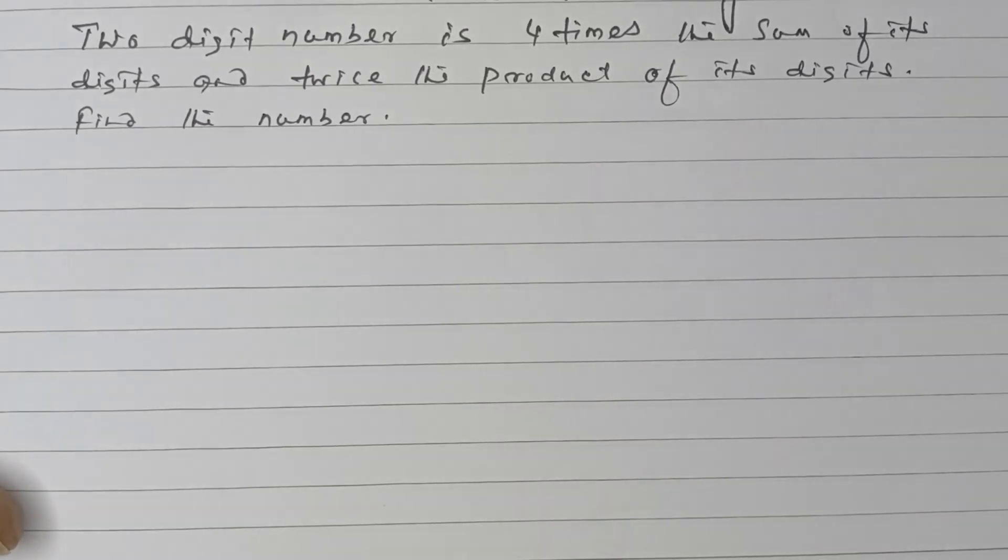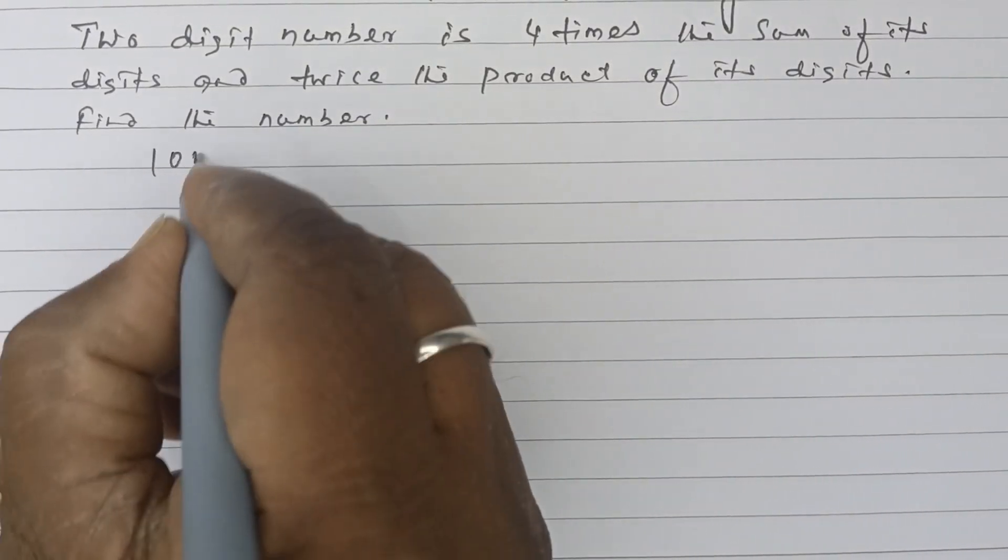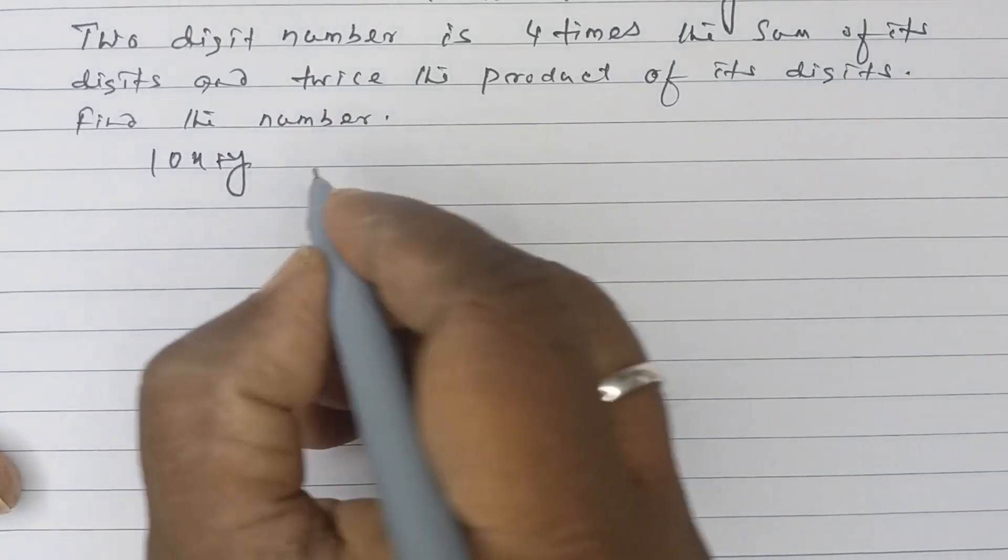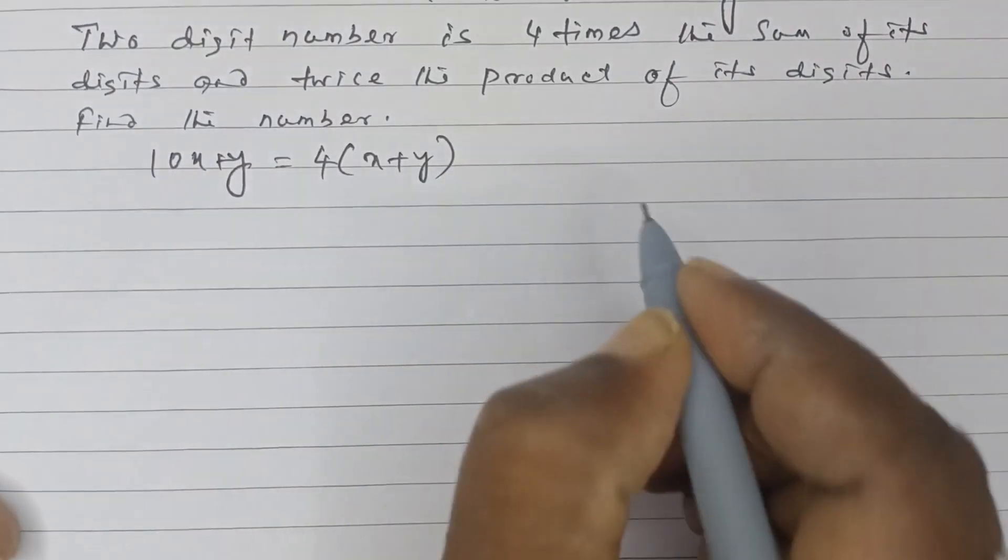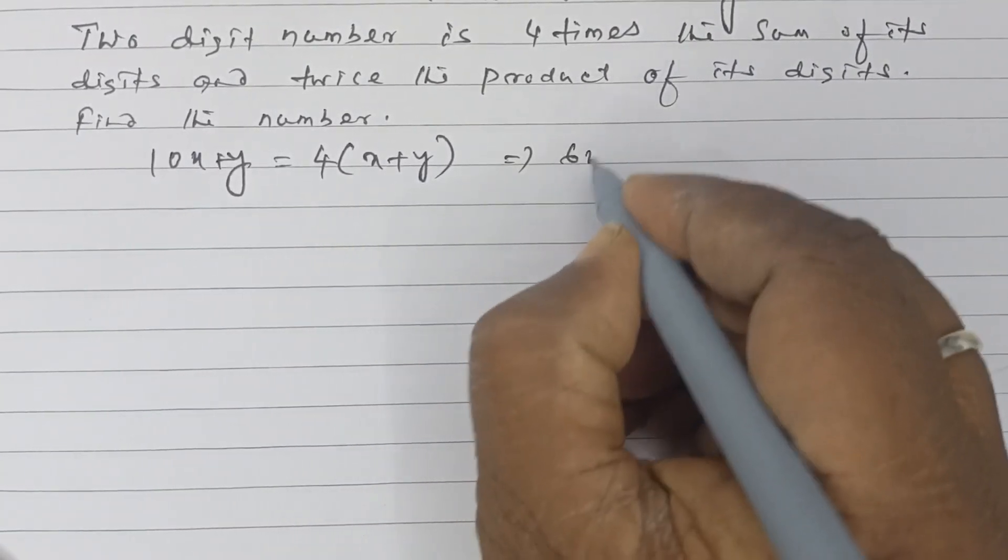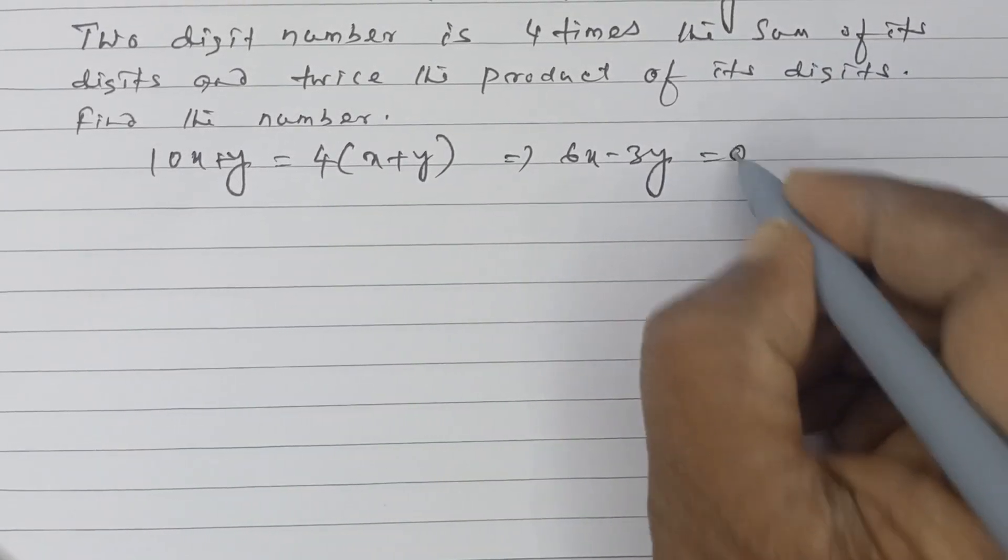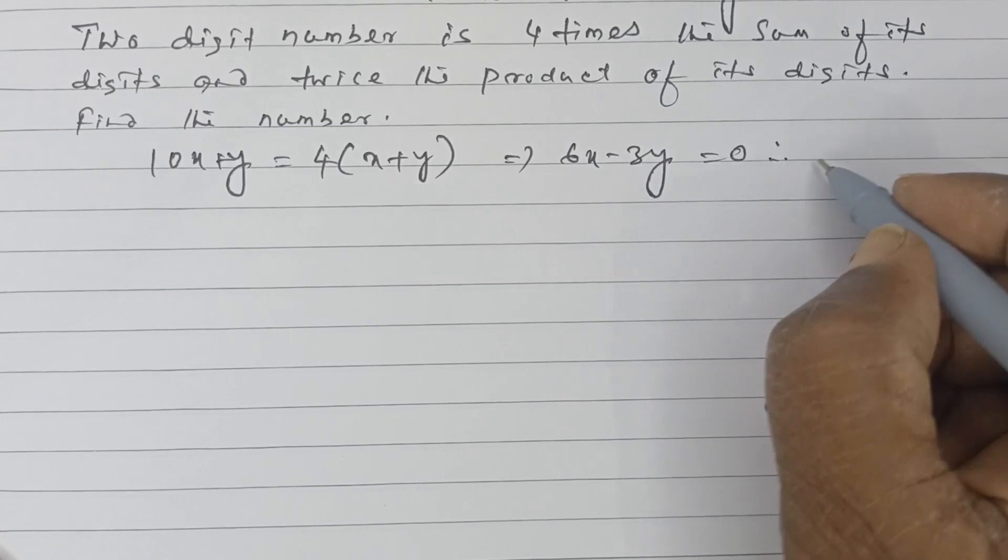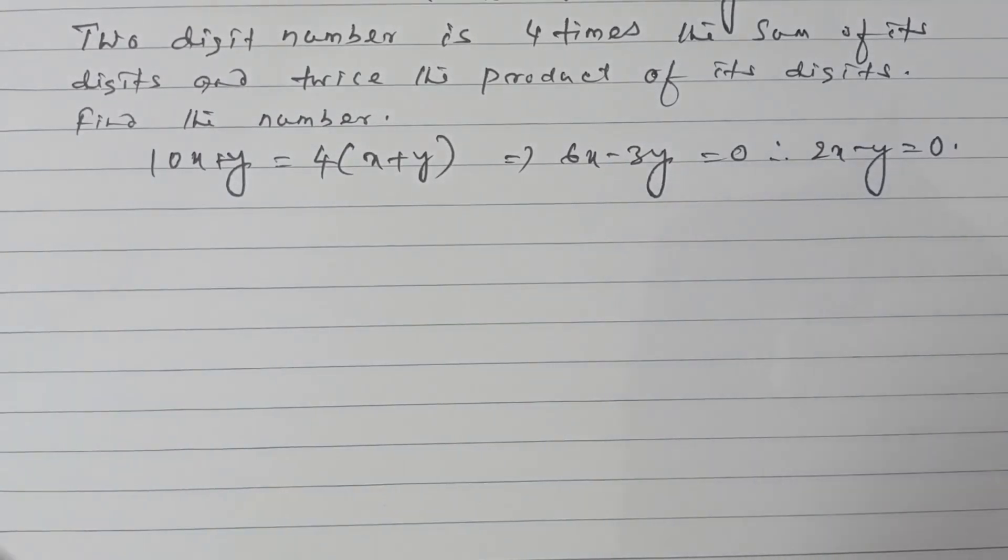Let the tenth digit of the required number be x and unit digit be y, so that 10x + y equals 4(x + y) as per the first statement. Then 6x - 3y = 0, which simplifies to 2x - y = 0.